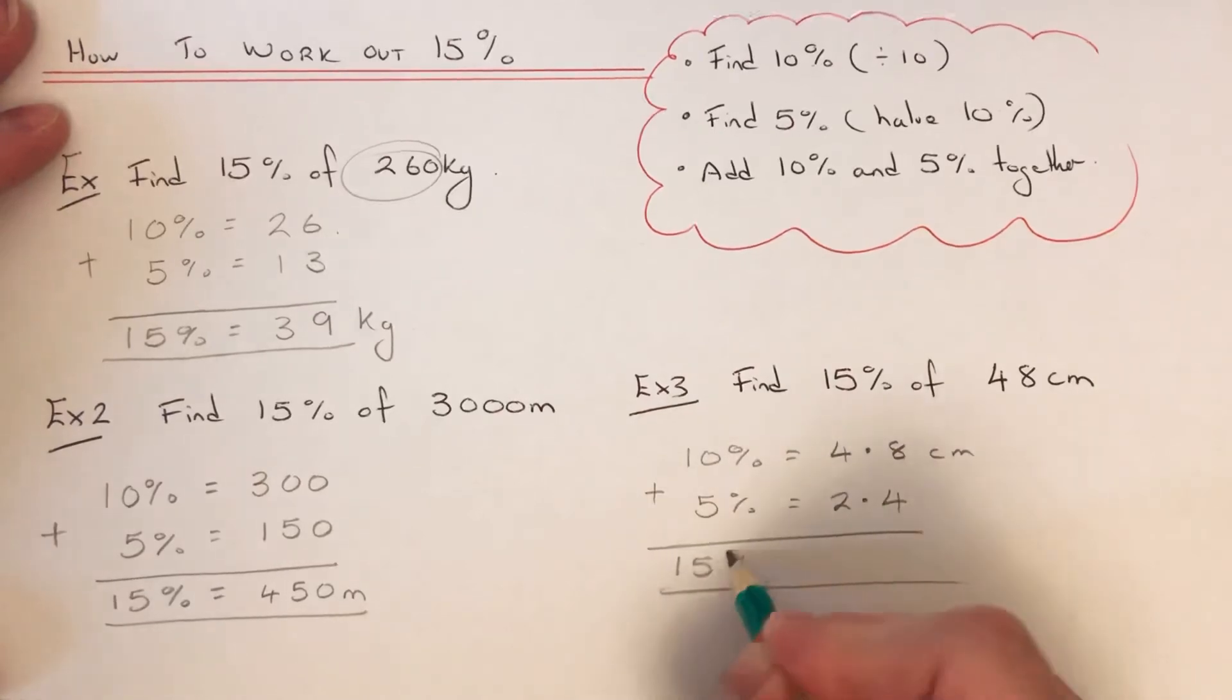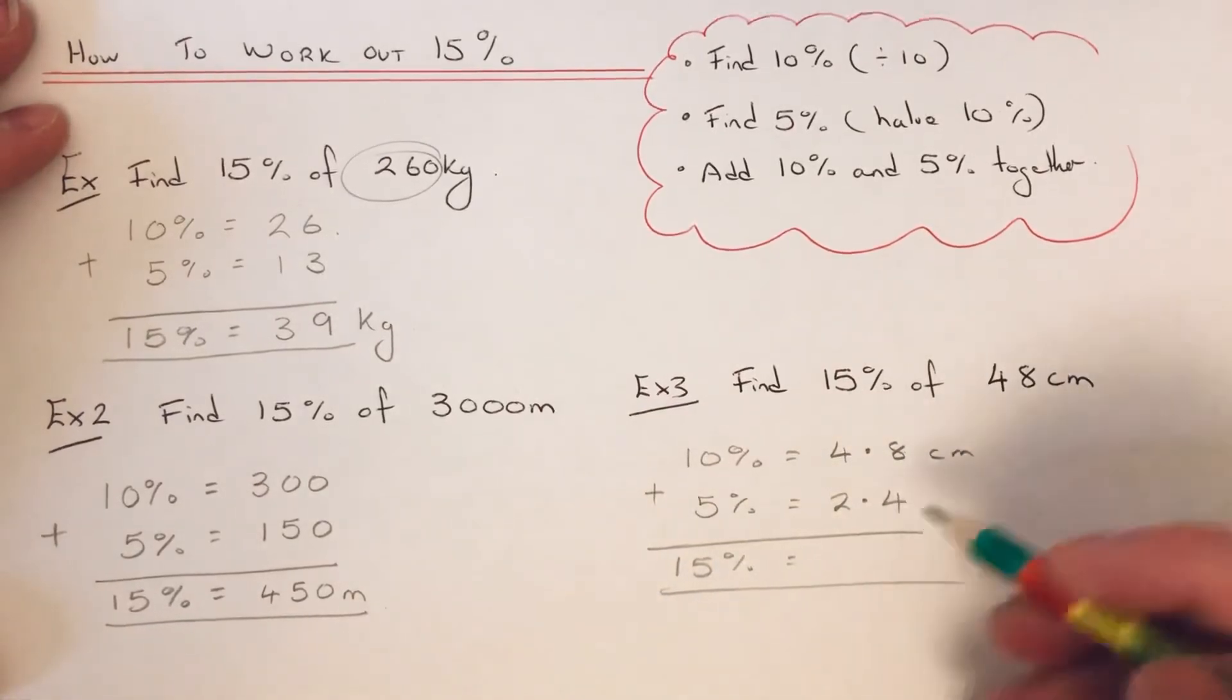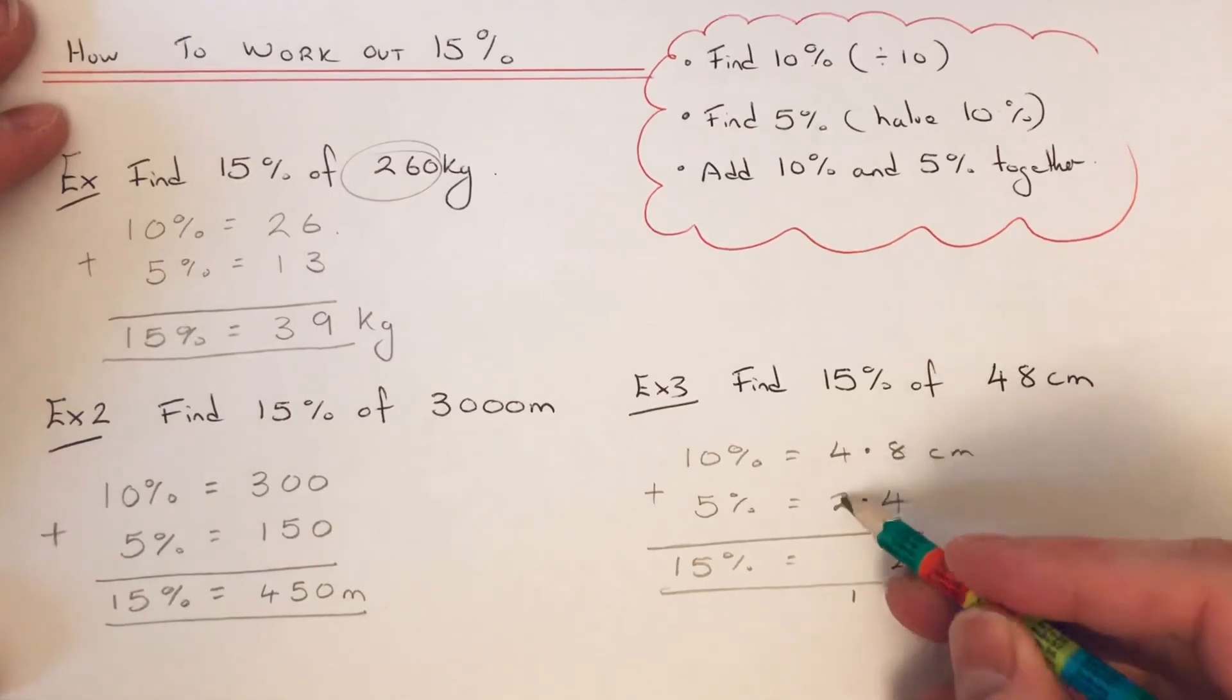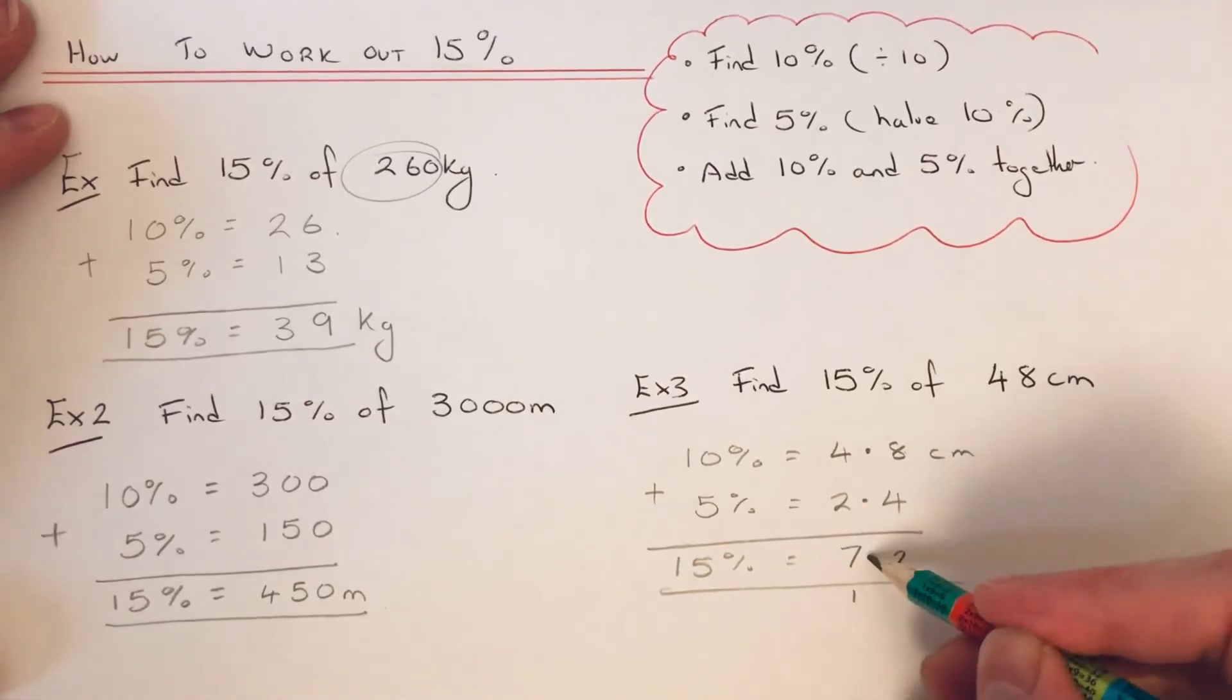just add these two numbers up now. 8 add 4 is 12, 4 add 2 is 6, plus the 1 is 7. So we get 7.2 centimeters.